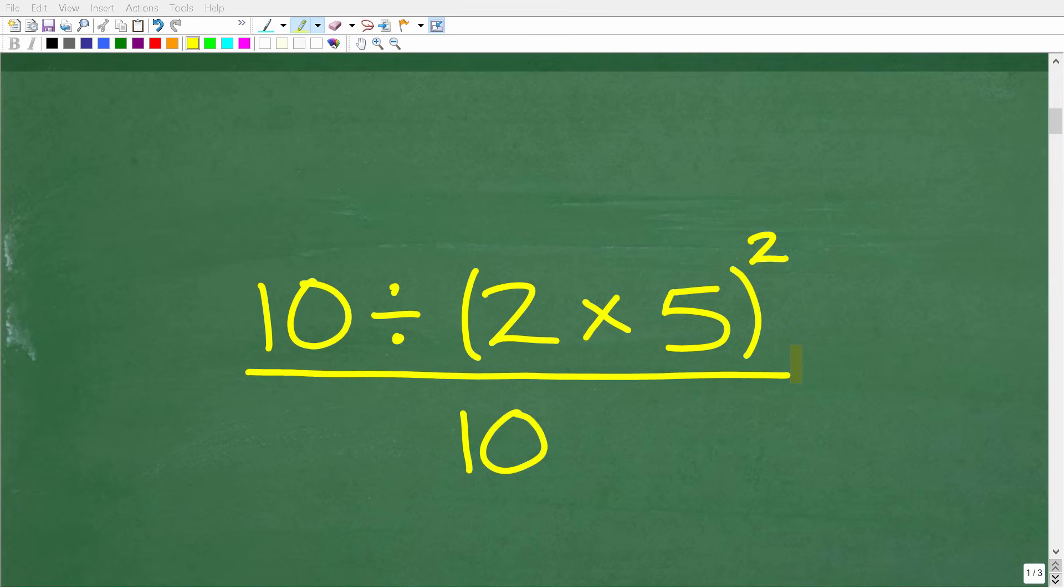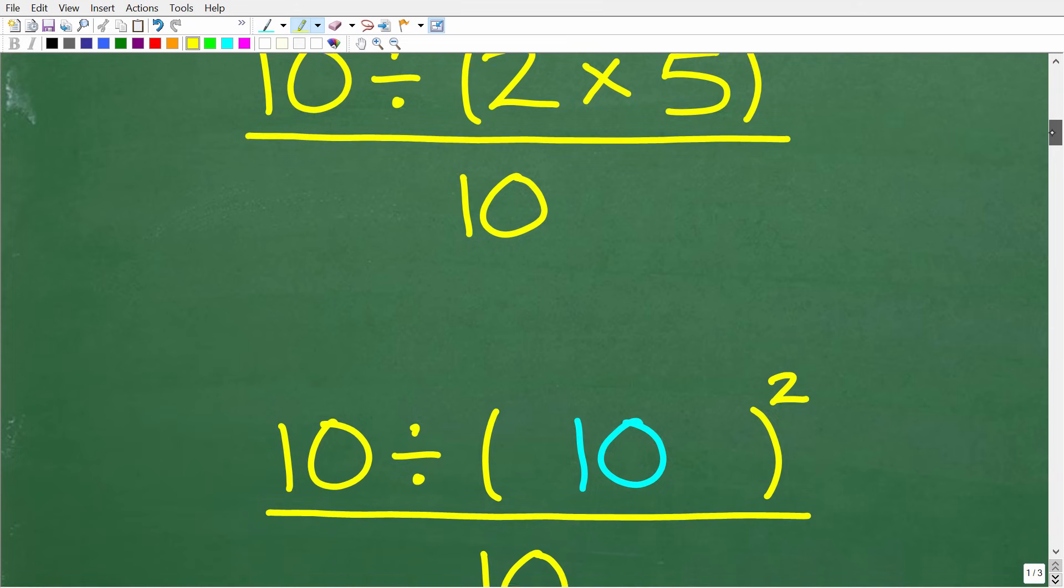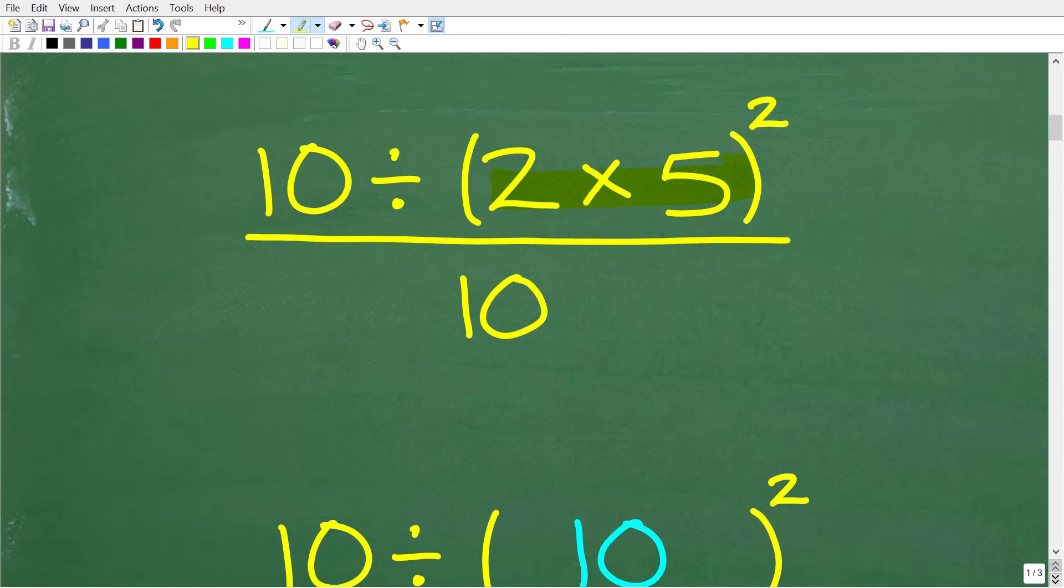Now, what do you think is going to be the first step I'm going to take? Well, if you said, hey, Mr. YouTube Math Man, I think you're going to multiply 2 and 5 because they're inside of the parentheses up here. Well, you would be correct.